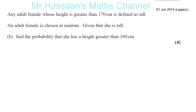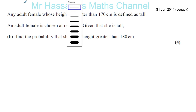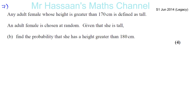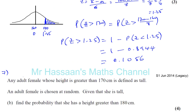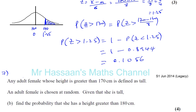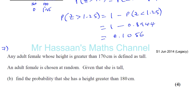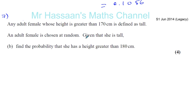Now we have question number seven, part B — a question about normal distribution. We already worked out for part A: the heights of adult females are normally distributed with a mean of 160 and a standard deviation of 8. We found the probability that a randomly selected adult female has a height greater than 170 centimeters. Any adult female whose height is greater than 170 is defined as tall. An adult female is chosen at random; given that she is tall, find the probability that she has a height greater than 180 centimeters.